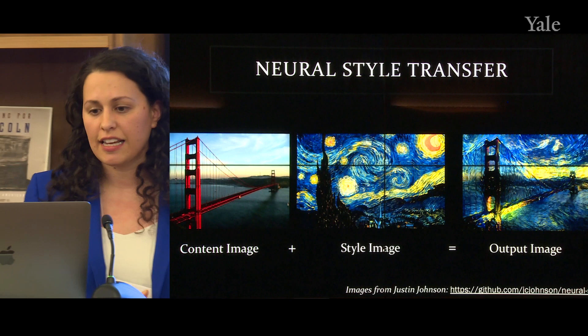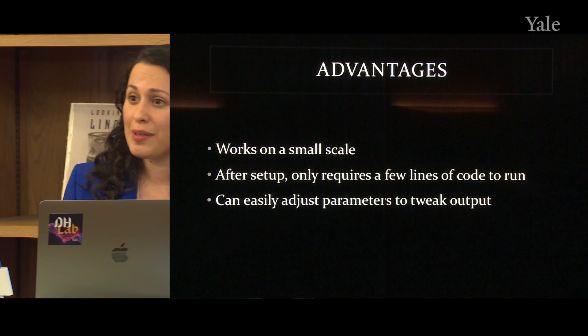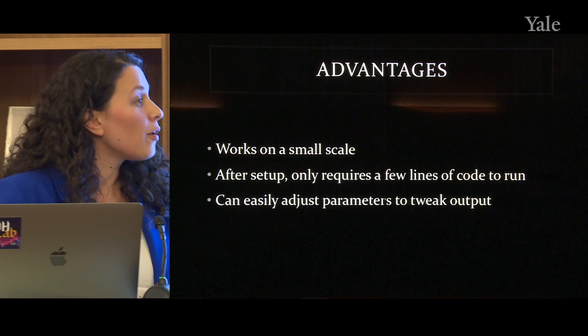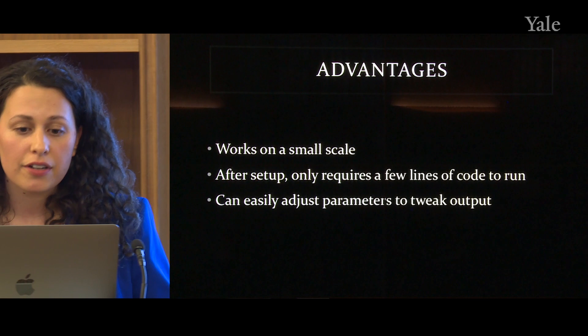There were several advantages we thought to using this approach. It works on a small scale — it can work with just two images, though it can work with more than two, as we'll see in a few minutes. After the initial setup, it only requires a few lines of code to run. This meant that after a session on the Unix shell, the student would be able to run this code on her own and change some of the parameters to tweak the output, so she wouldn't be dependent on us to run the algorithm.